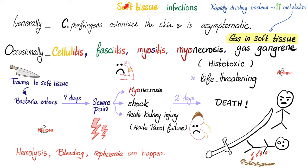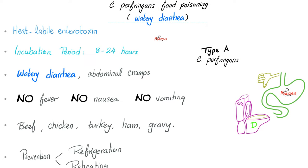In the last video, we talked about the soft tissue infections caused by Clostridium perfringens alpha toxin — cellulitis, fasciitis, myositis, myonecrosis, gas gangrene, tons of histotoxicity, and life-threatening disease. For example, a soldier got wounded and fell onto the soil. His wounds got contaminated with Clostridium perfringens. Seven days later he had severe pain, then myonecrosis, shock, and acute kidney injury. Two days after that, he's dead — myonecrosis, gas gangrene, septicemia, renal failure.